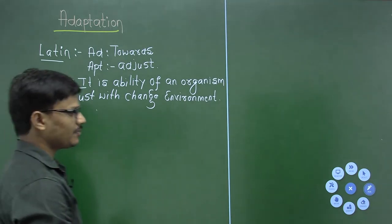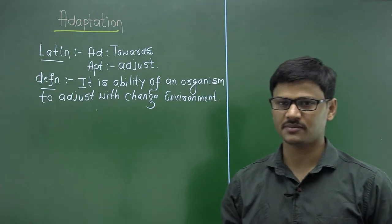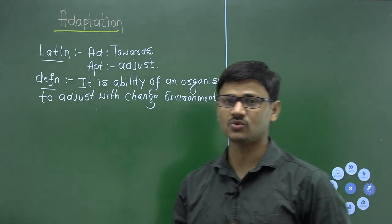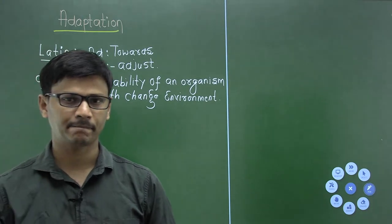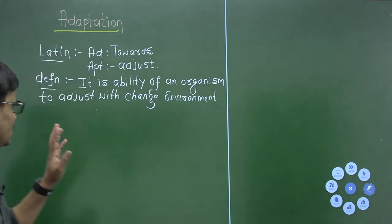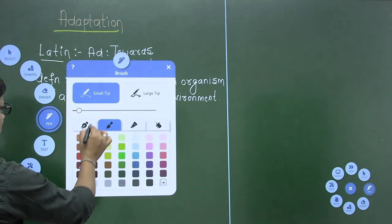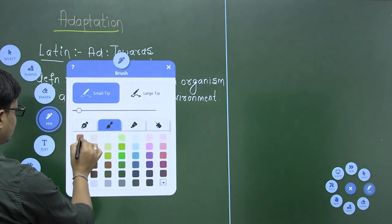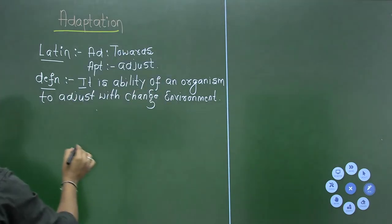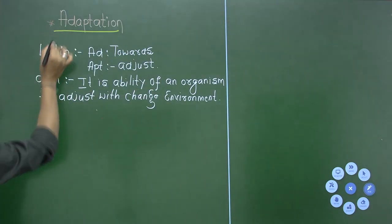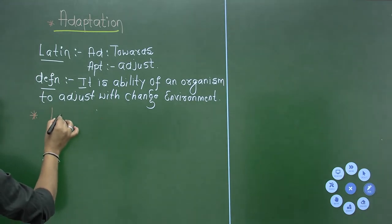Do remember, adaptation is one of the most important concepts and it helps an organism to survive and get adjusted with the change in the environment. After adaptation, there is one more property of a living organism — that is life span.